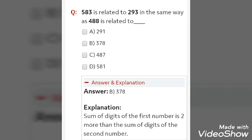Now, let us come to the next question. 583 is related to 293 in the same way as 488 is related to dash. The options are 291, 378, 487 or 581. The answer is 378.